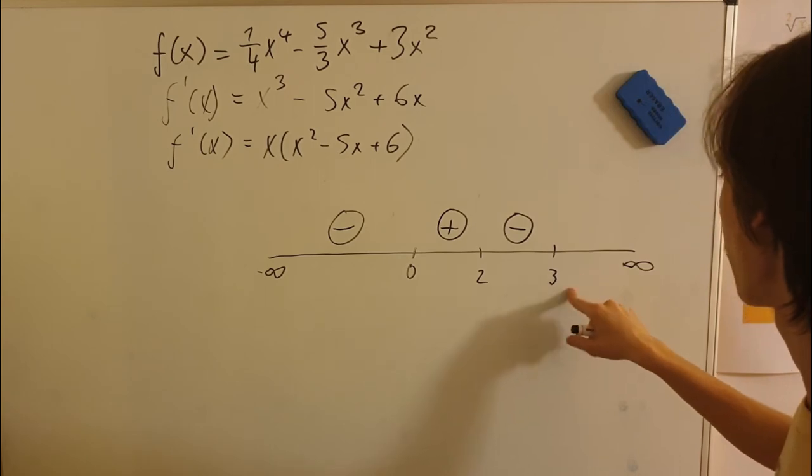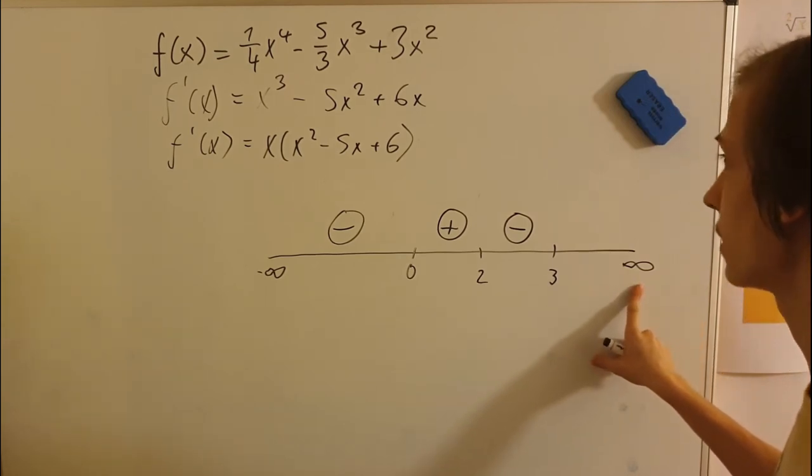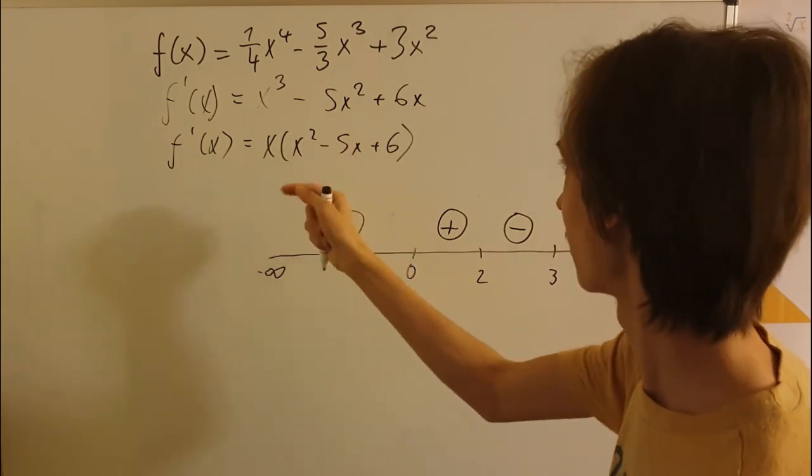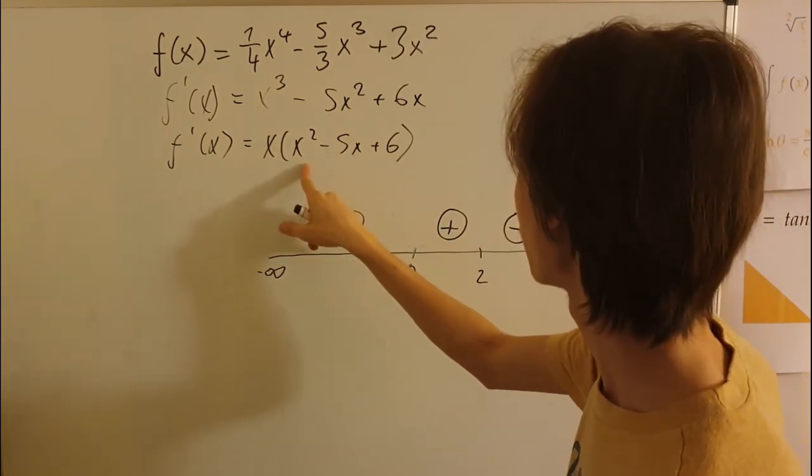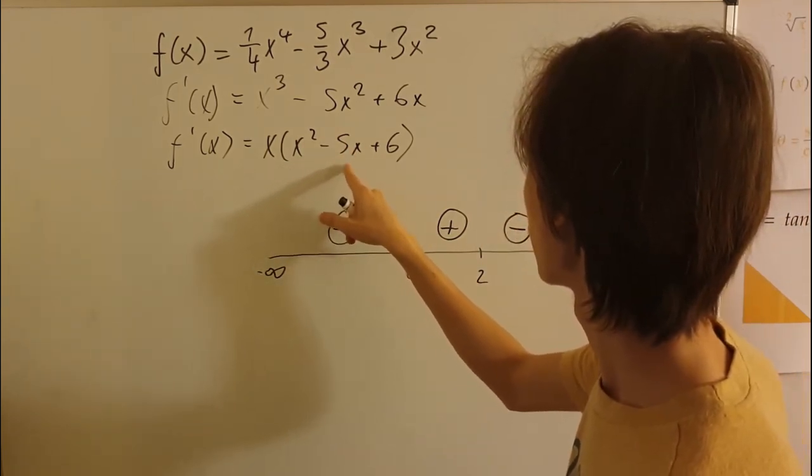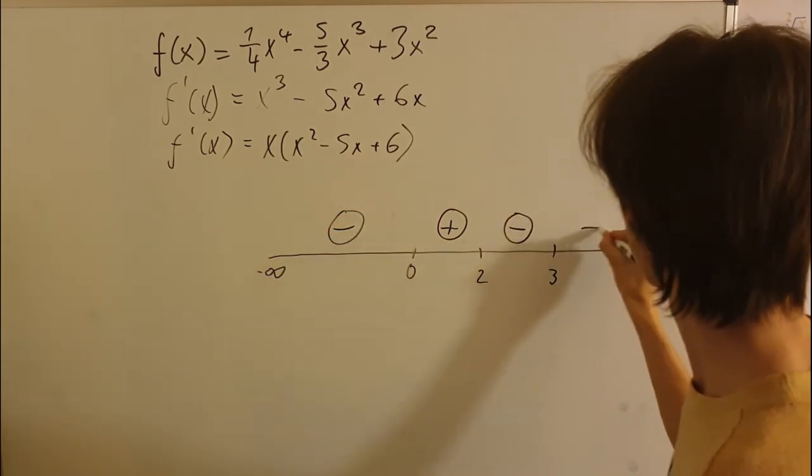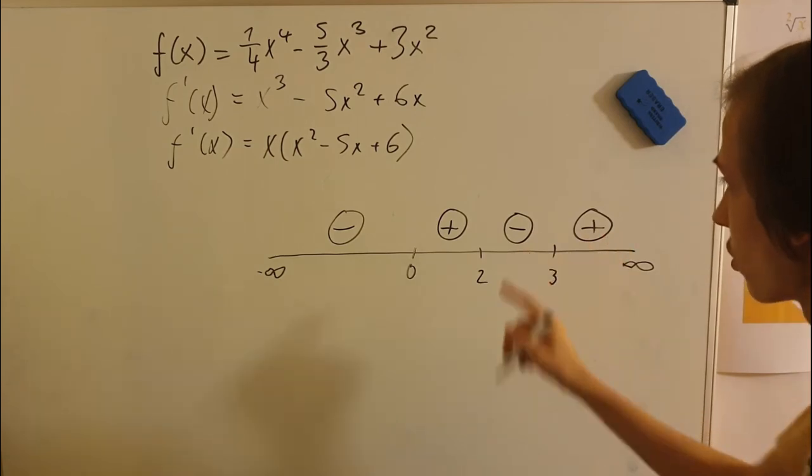And then we have 3 up to infinity. So let's plug in 1,000 or 10. So this is rising again. So we have two solutions. We now know.